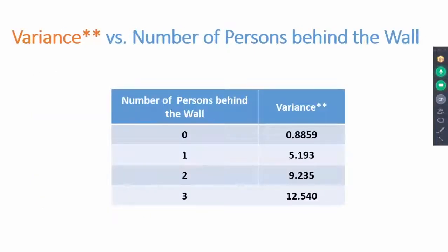As explained in the previous slide, we obtain double variance and compare it for cases of one of the experimental sets. We can see variance is proportional to the number of targets moving behind the wall.